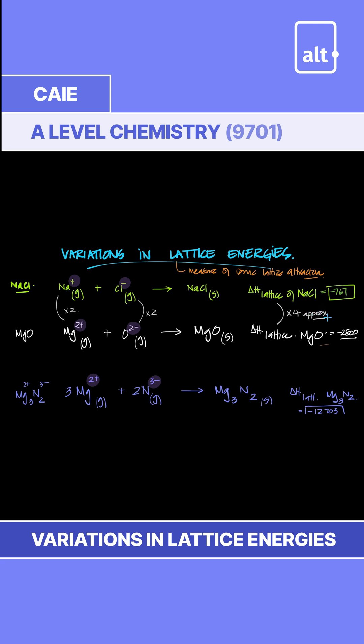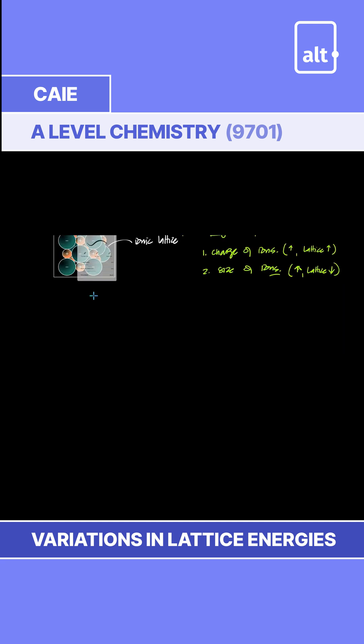It's not exactly 4 times, but approximately. The charges have the most to do with the lattice energy. Now, we had already seen NaCl. Na is 1+, Cl is 1-, solid. We saw its lattice energy was -767.